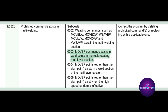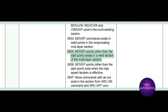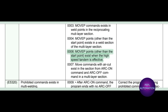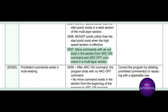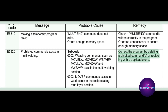Subcode 0003: MOVEP commands exist in weld points in the reciprocating multi-layer section. Subcode 0004: MOVEP points other than the start point exist in a weld section of the multi-layer section. Subcode 0006: MOVEP points other than the start point exist when the high-speed tandem is effective. Subcode 0007: MOV commands with air cut exist in the section from ARC-ON-Command to ARC-OFF-Command in a multi-layer section. Correct the program by deleting prohibited commands or replacing with an applicable one.